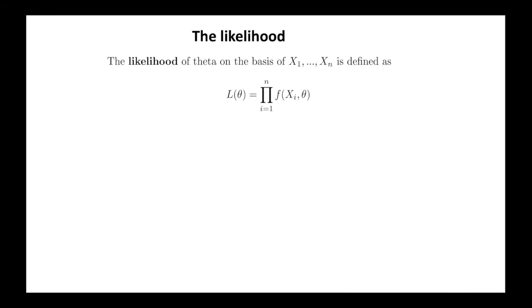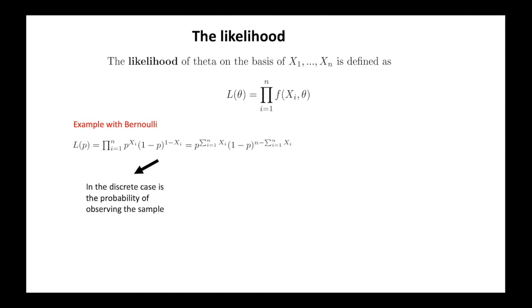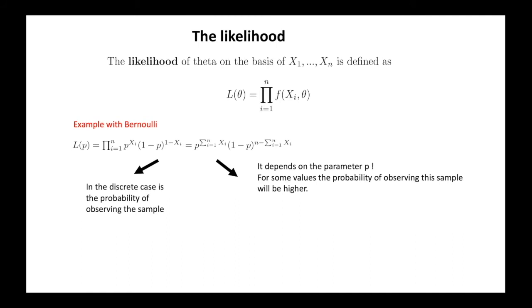Now it is time to see an example of a point estimator, or more precisely, how we can get one using the method of maximum likelihood. First, we need the concept of likelihood. We define the likelihood of theta on the basis of the sample x_1, ..., x_n to be the product of the probability mass function in the discrete case or density function in the continuous case of the random variables x_1, ..., x_n. In the example of the coin, we get that the likelihood is the formula you can see on the slide. Note, by definition, in the discrete case, L(theta) is exactly the probability of observing the sample x_1, ..., x_n, because it is the product of the probability of observing each observation in the sample.